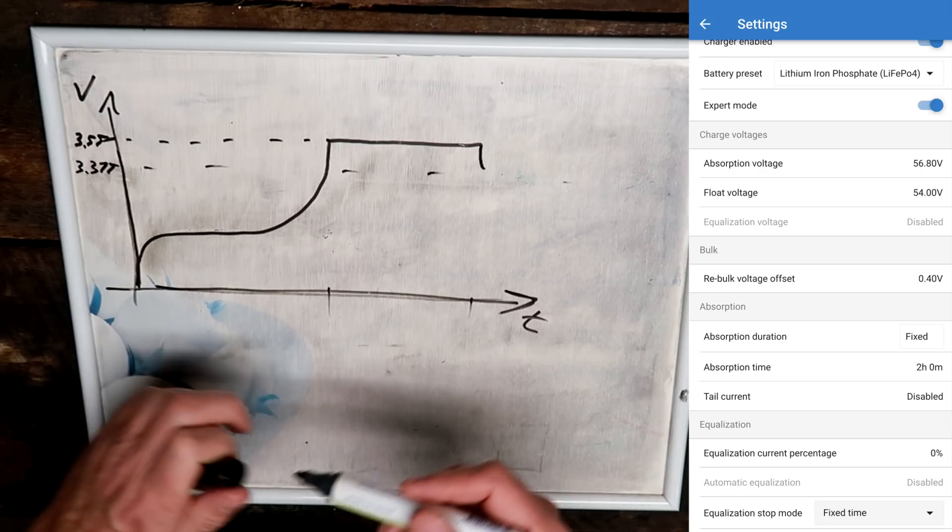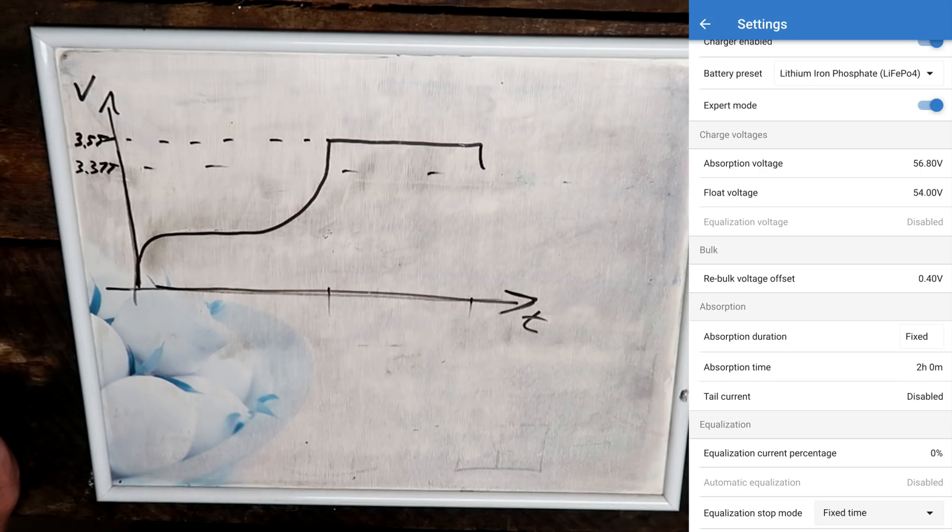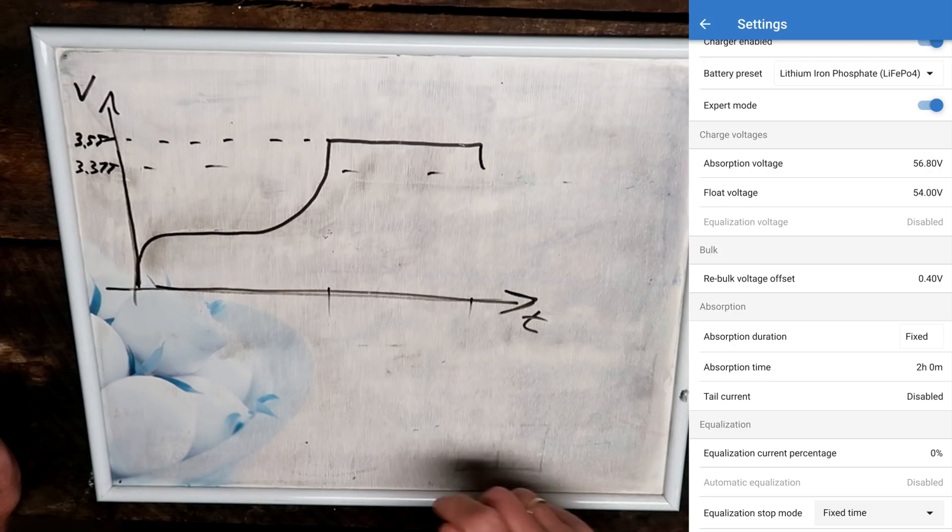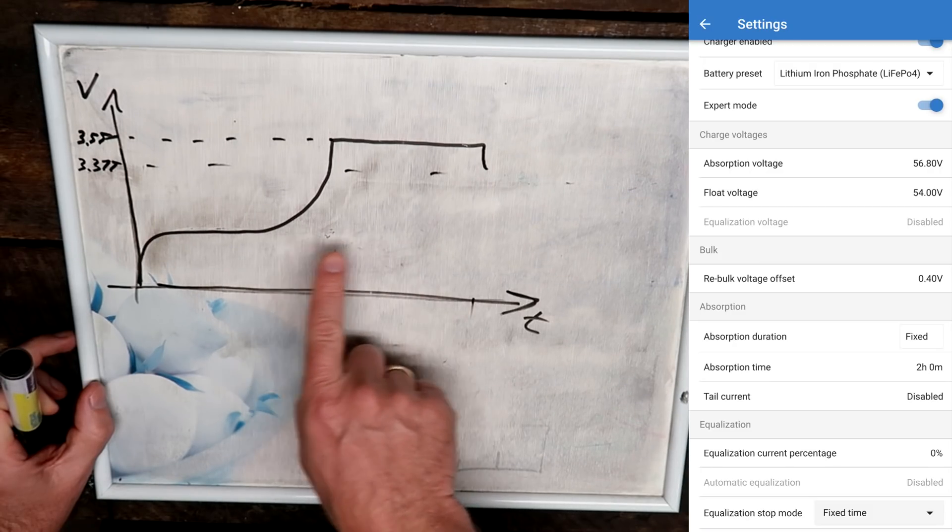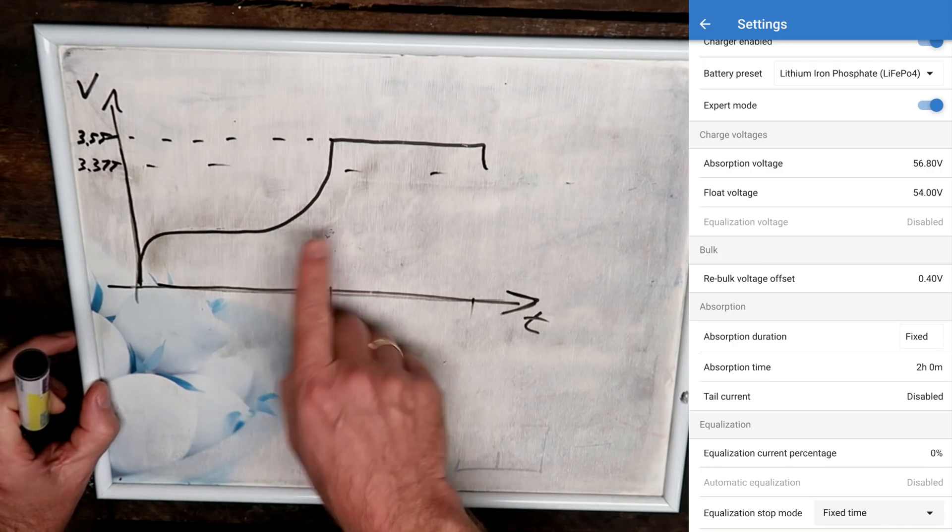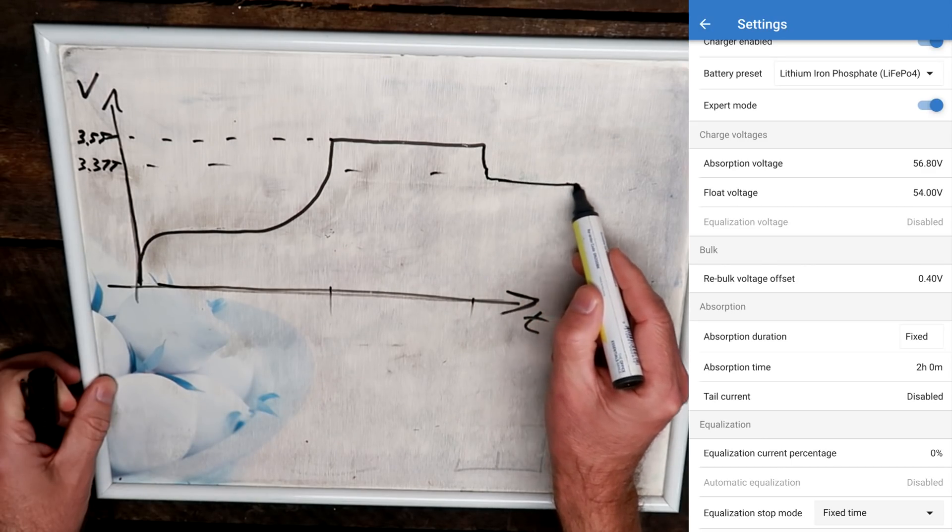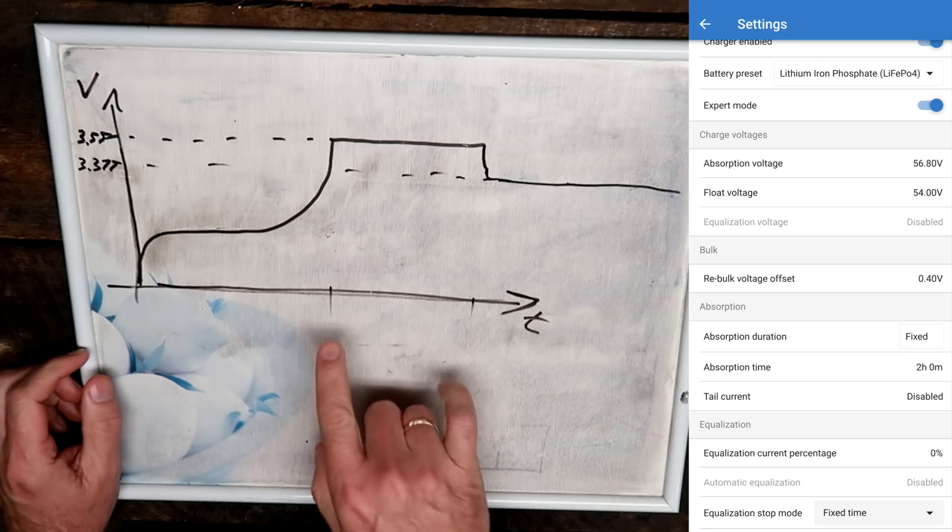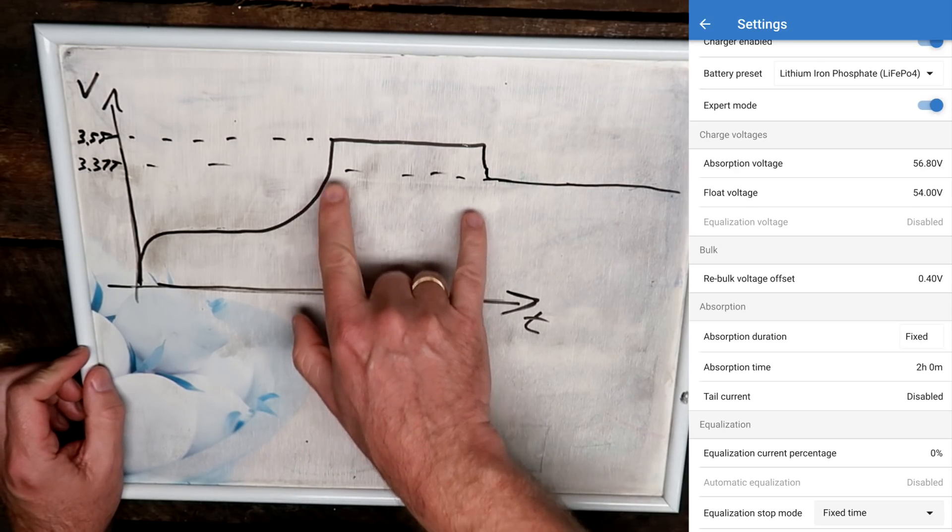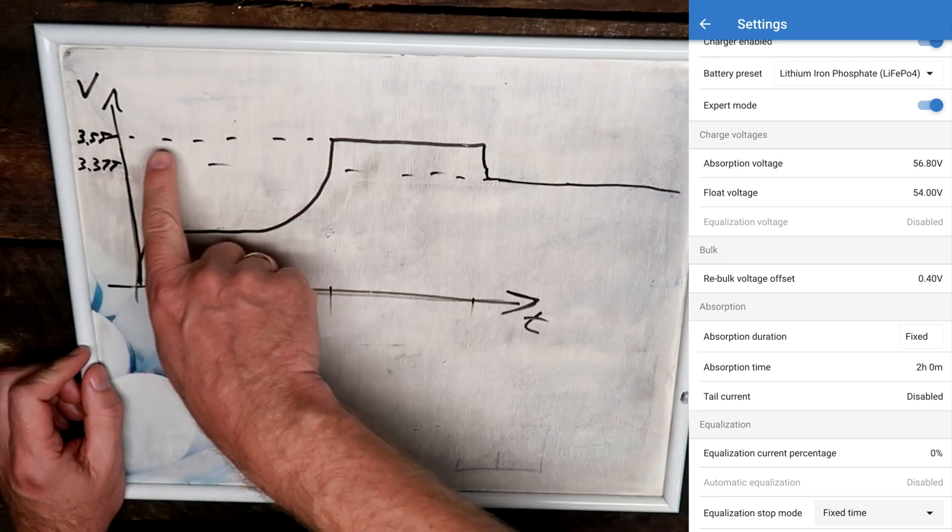Until they lower the voltage to 54 volts, 3.375 volts. This time span here is two hours, and you can see they have also turned off the tail current. So regardless of how much energy the battery still takes, it will stay there for two hours and then goes into float mode. The reason why they are doing this and pushing the battery so high is...